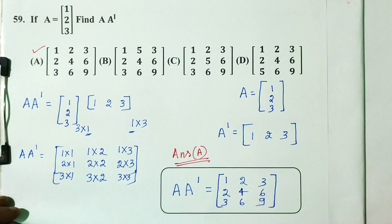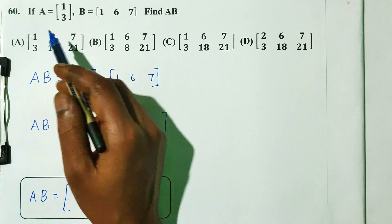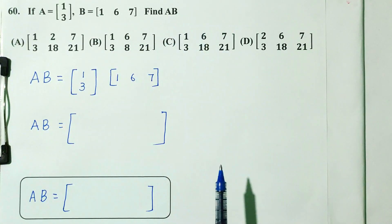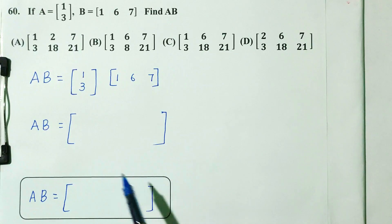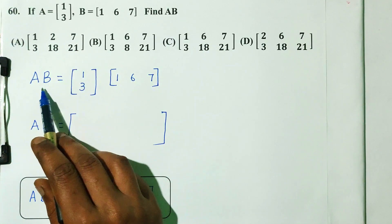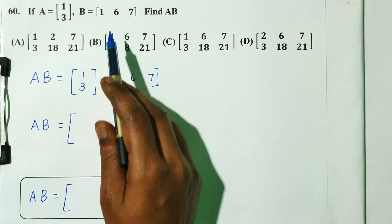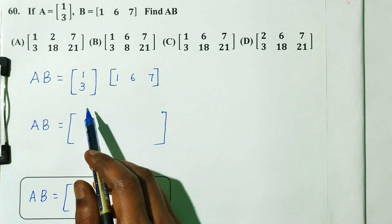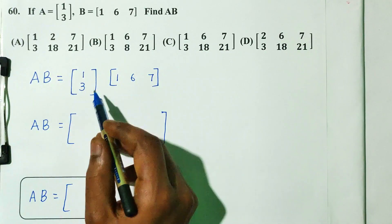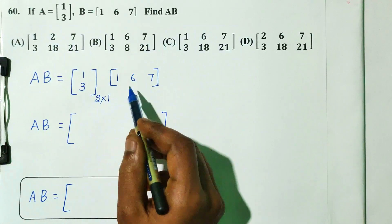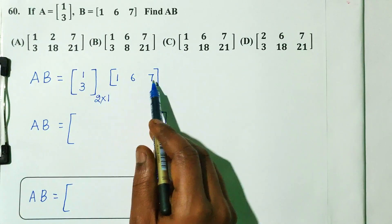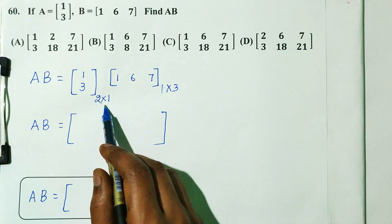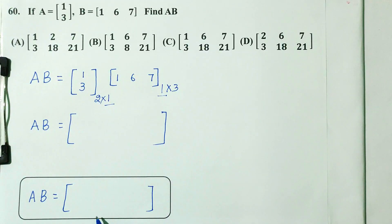Next question: A is equal to the column matrix: 1, 3 — and B is equal to the row matrix: 1, 6, 7. Find AB. There are 4 options. A is a 2 by 1 matrix and B is a 1 by 3 matrix. Since the inner dimensions match, multiplication is possible and the result is a 2 by 3 matrix.